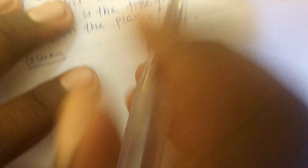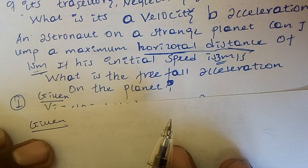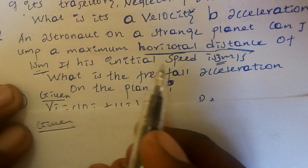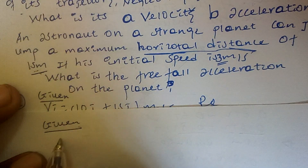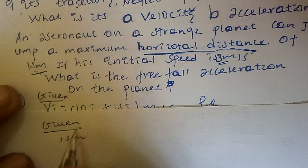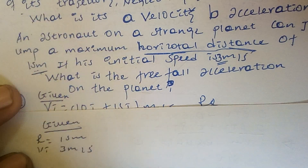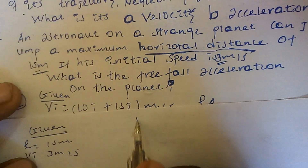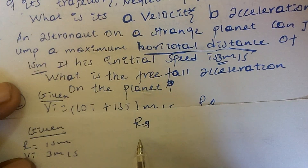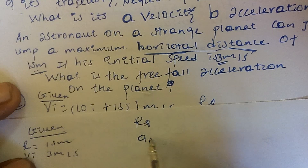The range — maximum horizontal distance — is given. The initial speed is 3 meters per second. So the required quantity is the gravity of the planet.